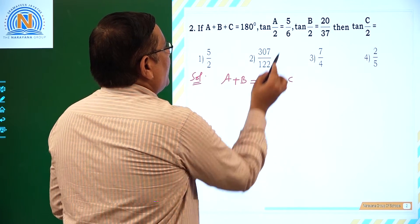Next question: the value of tan 70 degrees minus tan 20 degrees. We write tan 70 degrees as tan(50 plus 20) degrees, which equals tan 50 plus tan 20 divided by 1 minus tan 50 times tan 20. That implies, rearranging: tan 70 times (1 minus tan 50 tan 20) equals tan 50 plus tan 20.